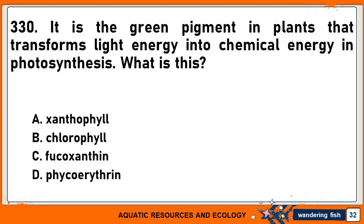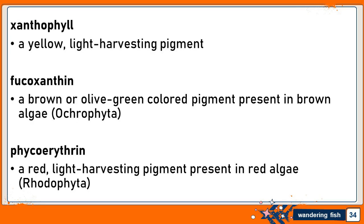It is the green pigment in plants that transforms light energy into chemical energy in photosynthesis. What is this? A. Xanthophyll. B. Chlorophyll. C. Fucoxanthin. And D. Phycoerythrin. The correct answer is B. Chlorophyll. Xanthophyll is a yellow light-harvesting pigment. Fucoxanthin is a brown or olive-green colored pigment present in brown algae. Phycoerythrin is a red light-harvesting pigment present in red algae.